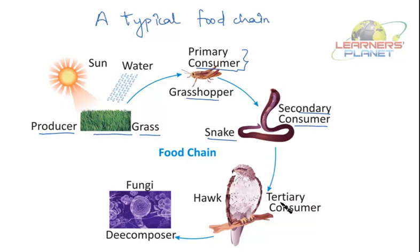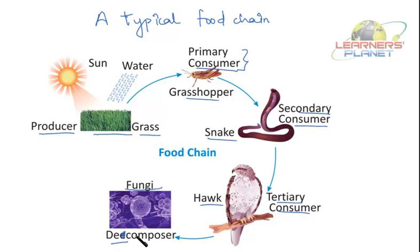This grasshopper is eaten by a snake, and that is why the snake is termed as secondary consumer because it consumes the grasshopper. Then comes the tertiary consumer — the snake is now consumed by a hawk or an eagle, so it is the tertiary consumer. Finally, when there is death of these animals, their flesh is eaten by bacteria and fungi because they decompose the dead bodies of plants and animals, and that is why they are termed as decomposers. The cycle goes on from the producer to the decomposer.